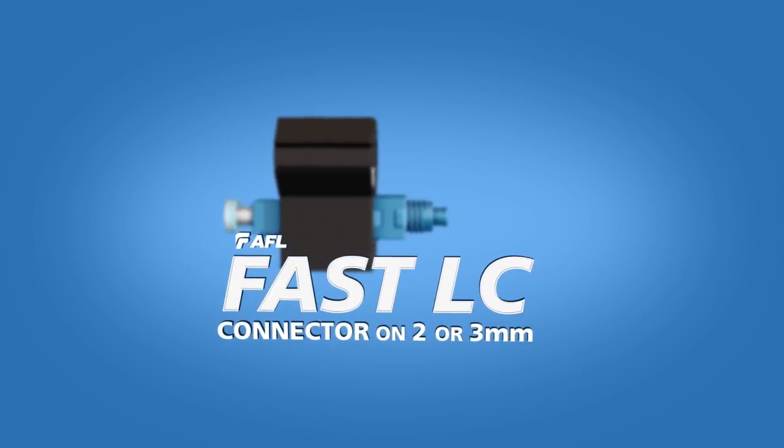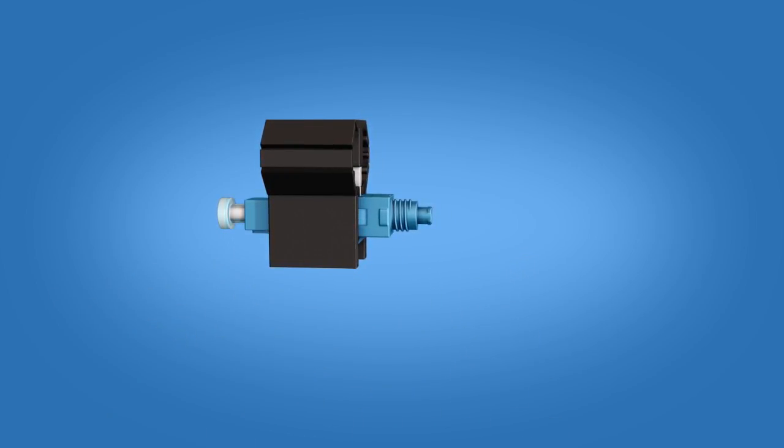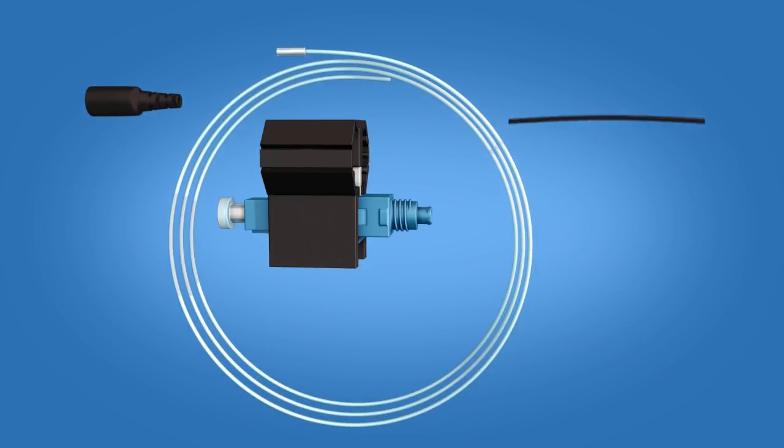The Fast LC Connector Kit contains the following items: a 900 micron boot, clear protective tubing, 250 micron tubing, and a Fast LC Connector.